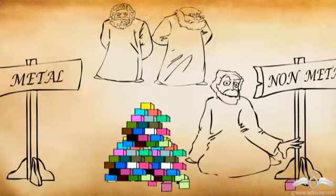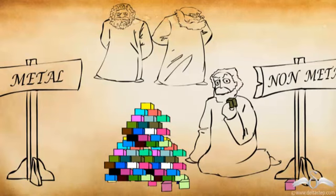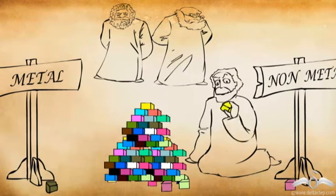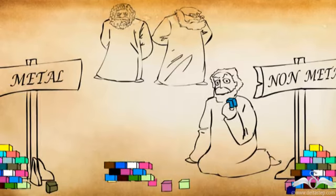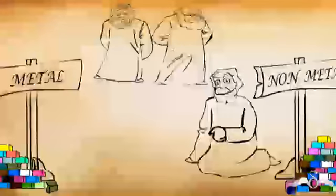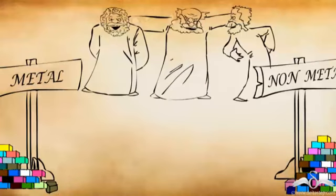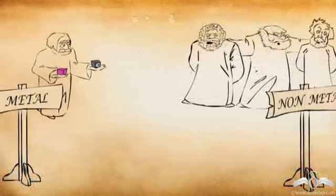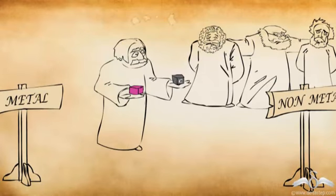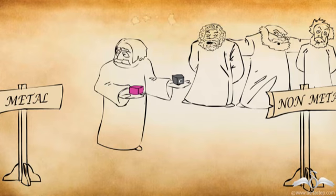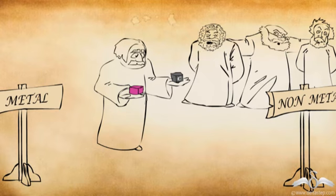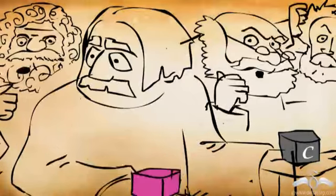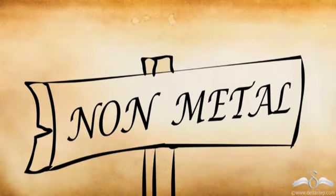A scientist then came up with a way. He classified the elements as metals and non-metals. This was the first broad classification of elements. But one day confusion arose — some elements show both metallic and non-metallic characteristics. So should these elements be placed under metals or non-metals? Hence this system failed.